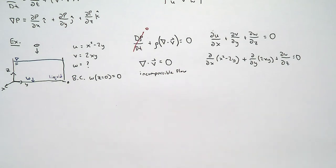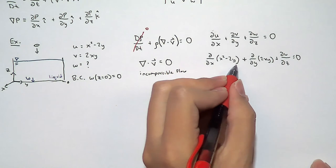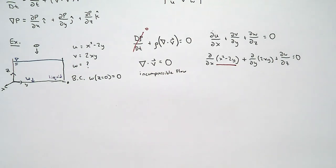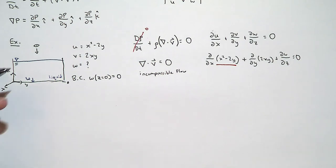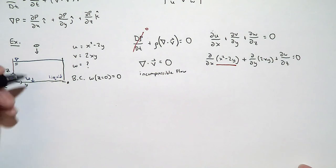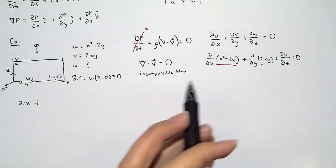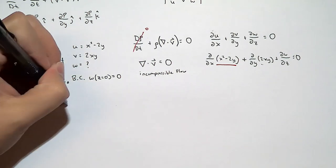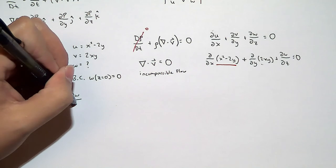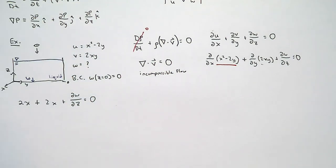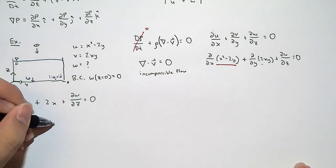Let's solve for the z-component of the velocity field. The partial derivative of U = x² − 2y with respect to x is 2x. The partial derivative of V = 2xy with respect to y is also 2x. So we have 2x + 2x + ∂W/∂z = 0, which gives us ∂W/∂z = −4x.